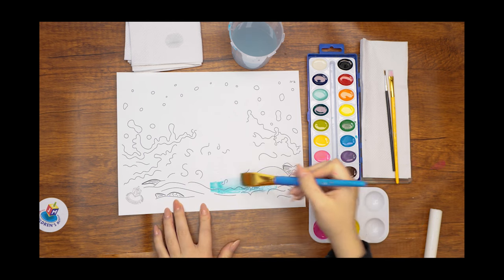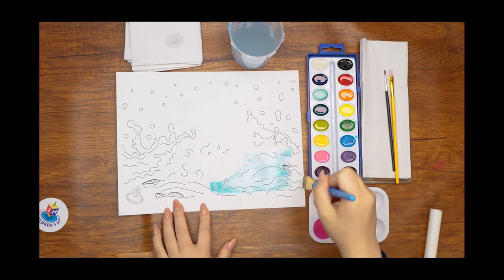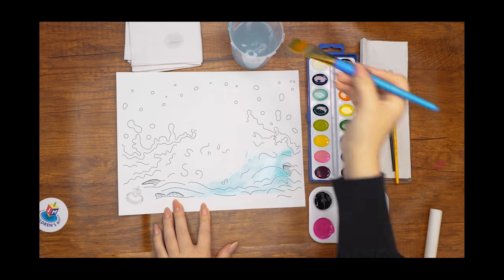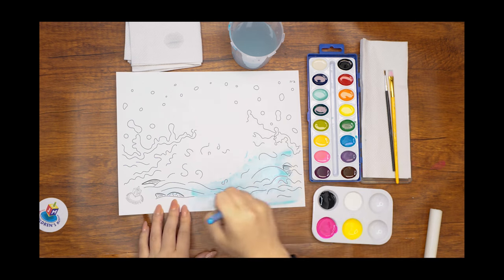Wet the big paintbrush and dip it into the blue watercolor. If you haven't already, swish the brush around a little to generate some pigment. Now paint the bottom half of the background, the part that is the water.